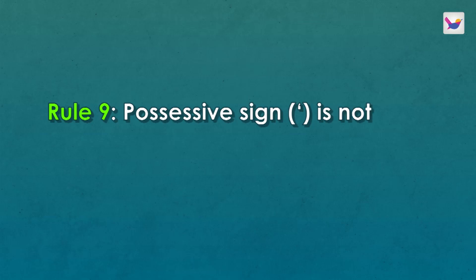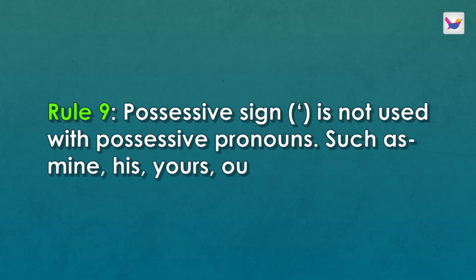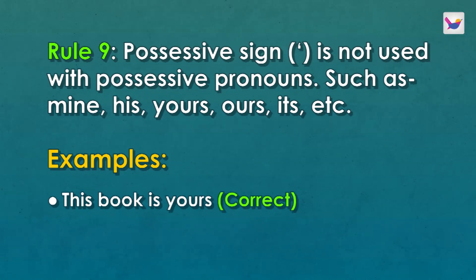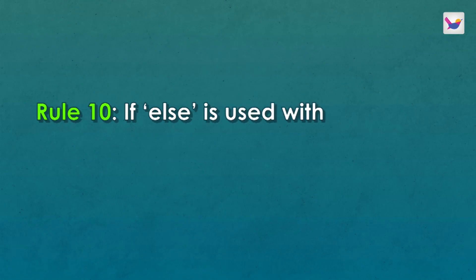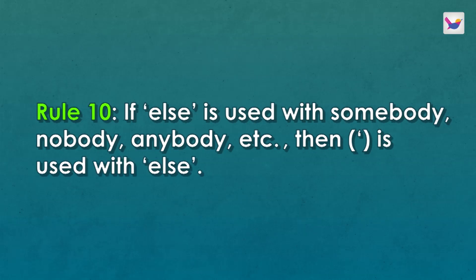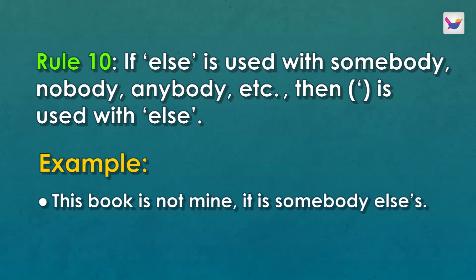There are some words where the possessive sign apostrophe is not used, because they are already possessive pronouns. For example: mine, his, yours, ours, its, etc. These are possessive pronouns and do not require an apostrophe. Rule number ten: if the word ELSE is used with SOMEBODY, NOBODY, ANYBODY, etc., then the apostrophe S is used with ELSE. For example: somebody else's.